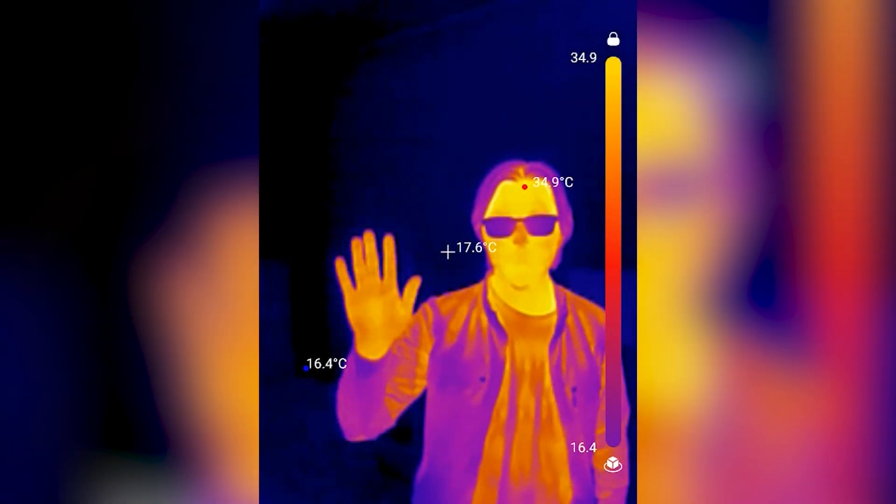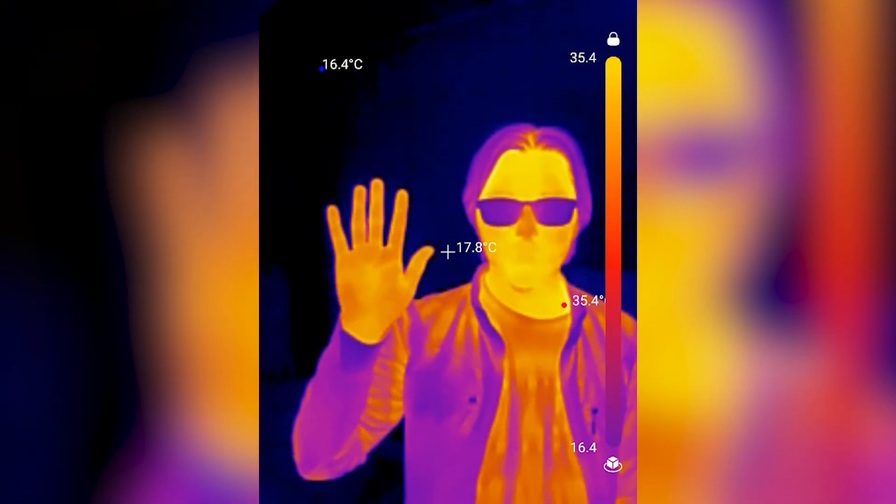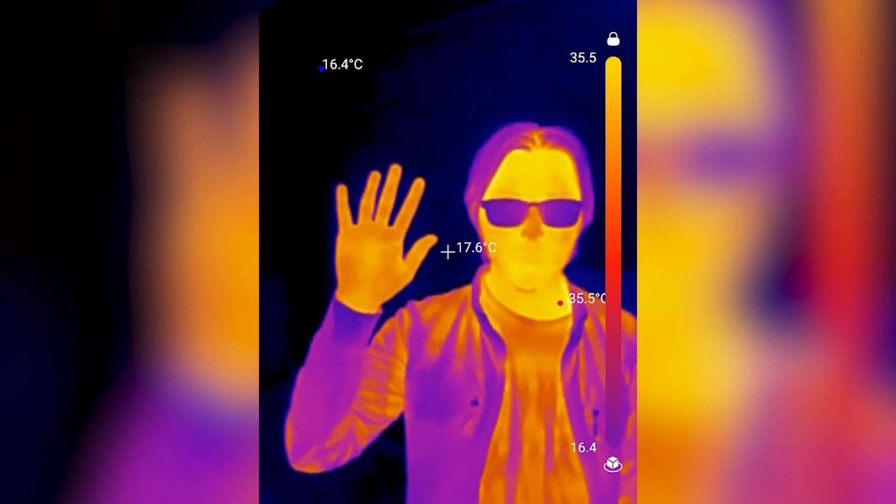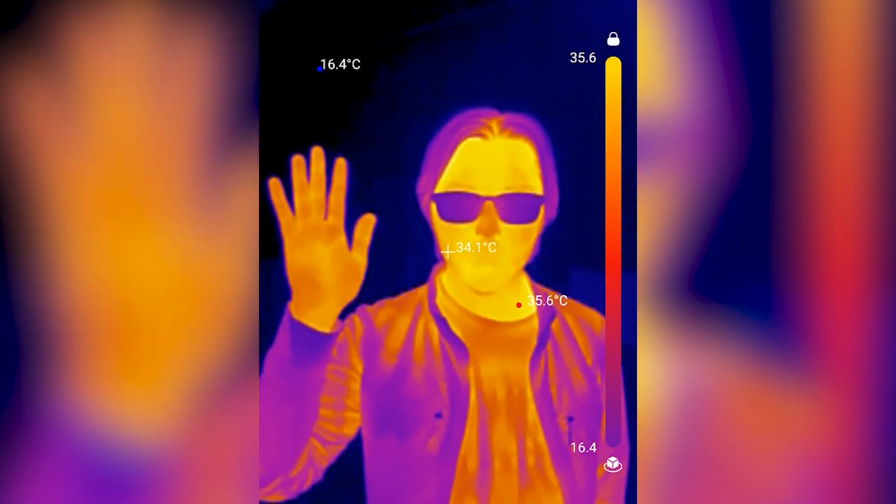And in fact, even your body at just around 37 degrees Celsius is constantly emitting infrared light, just at much lower frequency. We don't see it with our eyes, but it's always there.